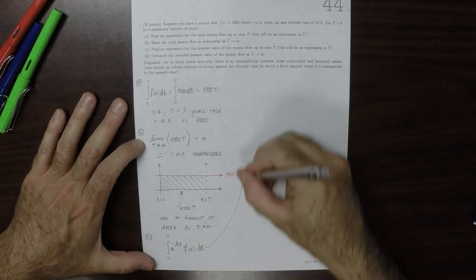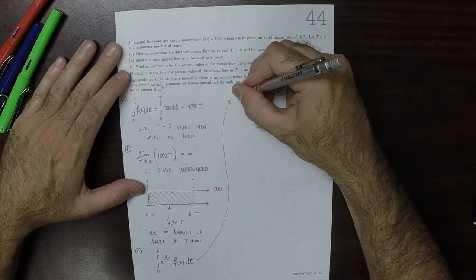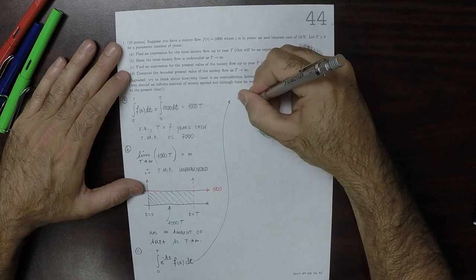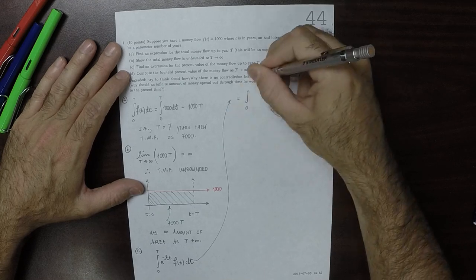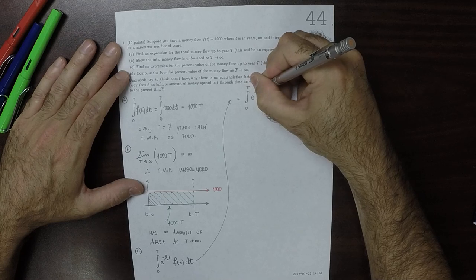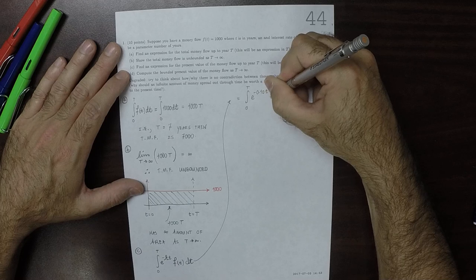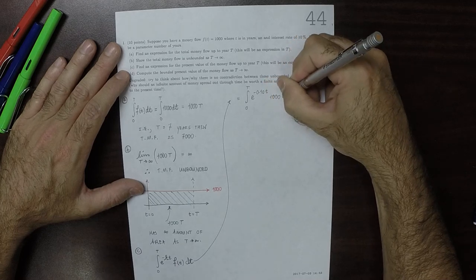Okay. So that is equal to integral zero to big T, exponential of negative 0.10 little t, and then 1,000, d little t.